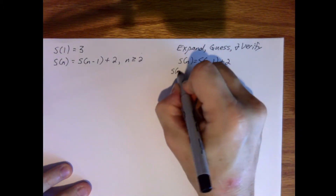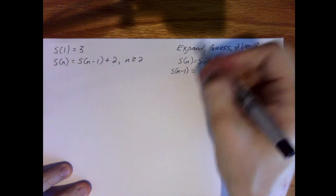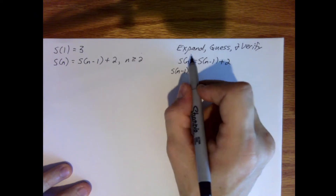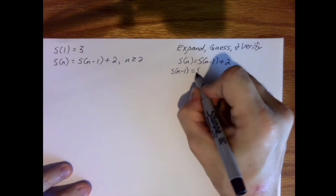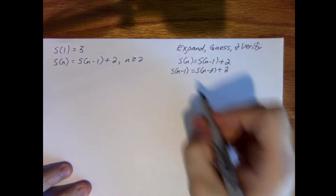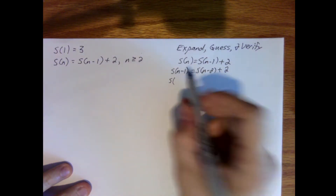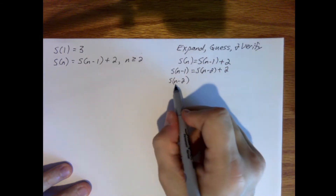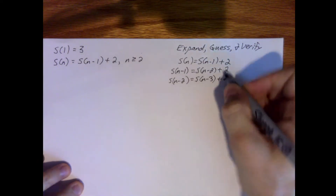Which means that s of n minus 1 is equal to its previous value, assuming we can go farther back. So for example, if n was 10, s of 10 is equal to s of 9 plus 2, and s of 9 would be equal to s of 8 plus 2, and so forth. The term previous to s of n minus 2 would be s of n minus 3 plus 2, and so forth.